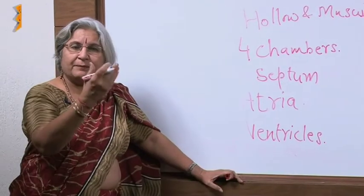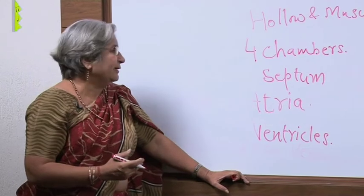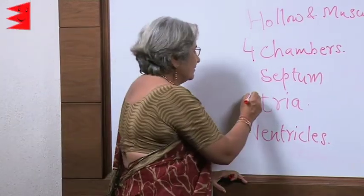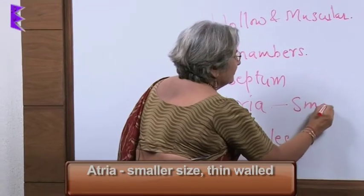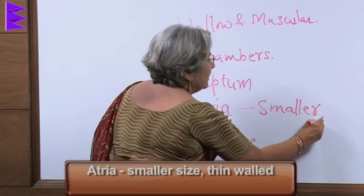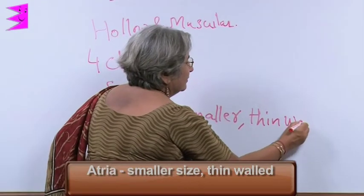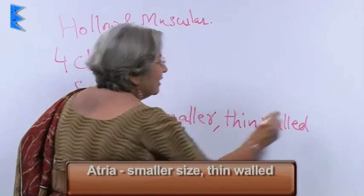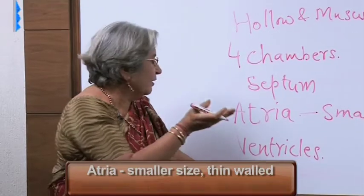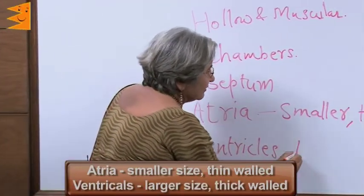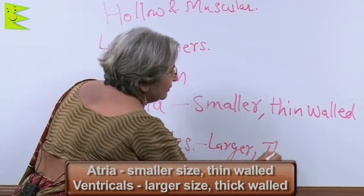Comparing the structure of atria and ventricles: atria are smaller in size and thin-walled, and they are the upper chambers, while ventricles are larger and thick-walled.